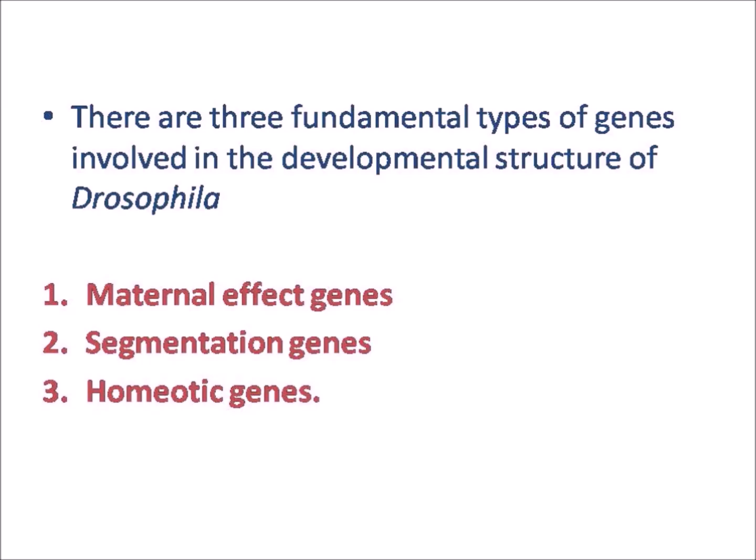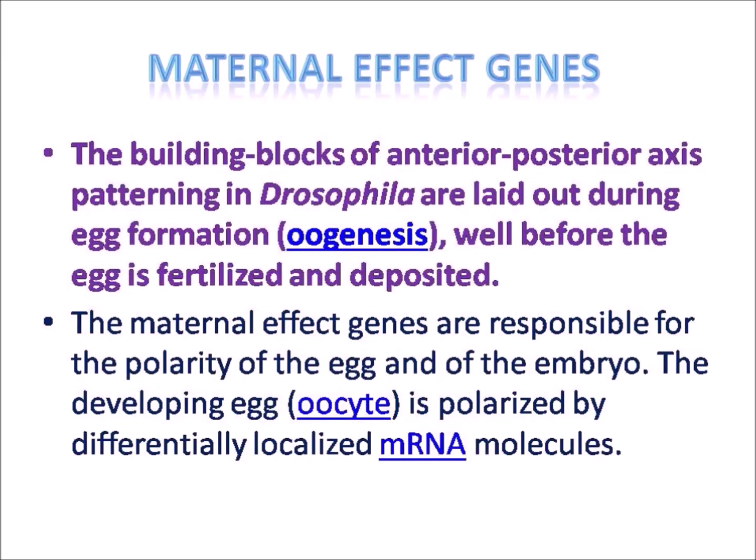The anterior-posterior polarity of the embryo, larva, and adult is determined by these genes. These axis-determining genes are active in the ovary tubes of the maternal organism; they produce mRNA that is placed into different regions of the egg. The protein products of these genes activate or repress the expression of another group of genes called zygotic genes. There are three fundamental types of genes involved in the developmental structure of Drosophila: maternal effect genes, segmentation genes, and homeotic genes.